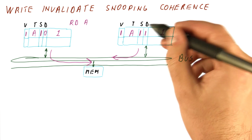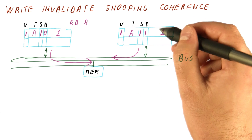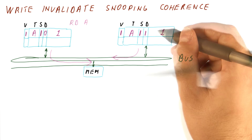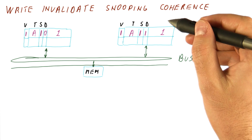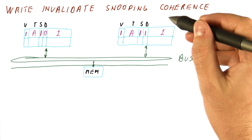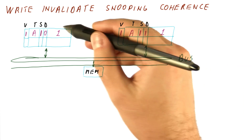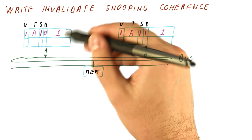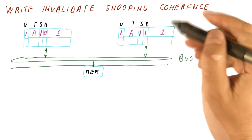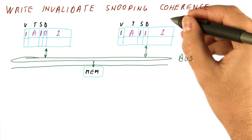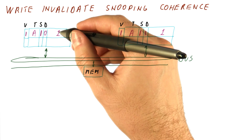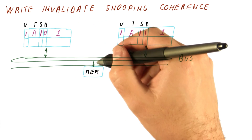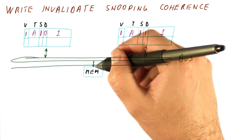The cache that gave the data now also knows it's shared because it provided the data to someone else — it's no longer the only one with it. Just like in a write update protocol, if we have a lot of reads, they can now be cache hits. Another write will invalidate this, causing a cache miss again.